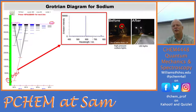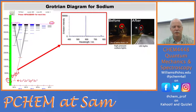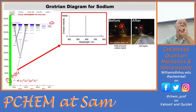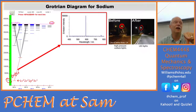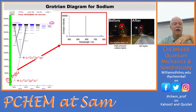Sodium streetlights are very yellow and kind of getting replaced because they're not pleasing, though they're dirt cheap. Santa Rosa replaced their sodium streetlights with LED lights giving nice bright white light. You should be able to figure out the electron configurations for any of the levels in these Grotrian diagrams: the bottom one is 1s²2s²2p⁶3s¹ — that's the neon core plus 3s¹ — and the next one moves that electron to 3p, leaving the neon core alone.